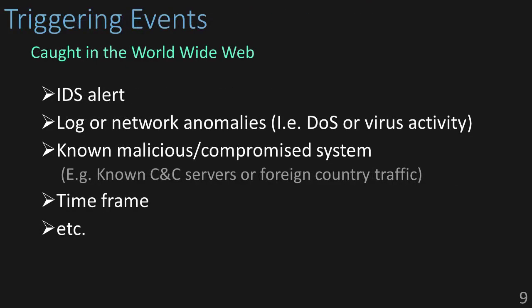When trying to understand your triggering events, here are some examples of things that might prompt an investigation: IDS or log alerts, network communication to known malicious networks, servers, addresses, or countries, or even odd things happening around unexpected timeframes — like a coworker logging in at 2 o'clock in the morning.